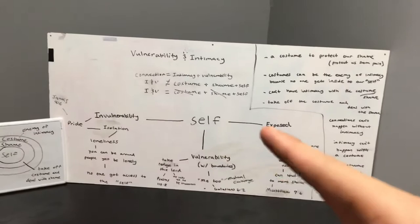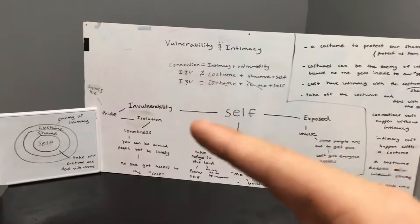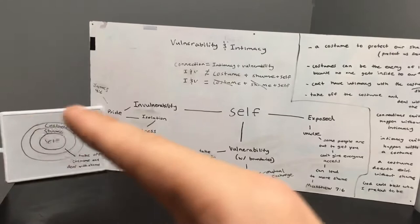I'm going to go to the left first: invulnerability. This person is very prideful and they do not open up because of a fear of intimacy, which leads to a fear of pain, a fear of the shame. So they put a very big costume on and do not let anyone in.